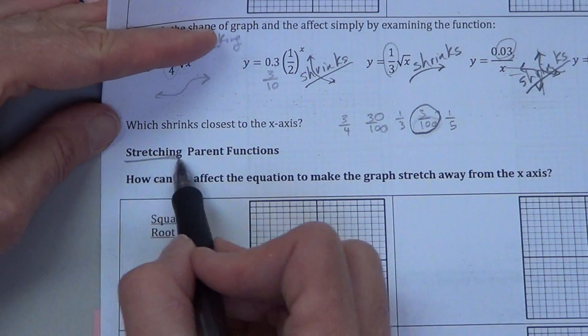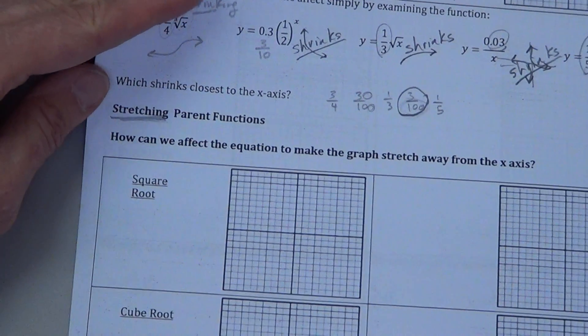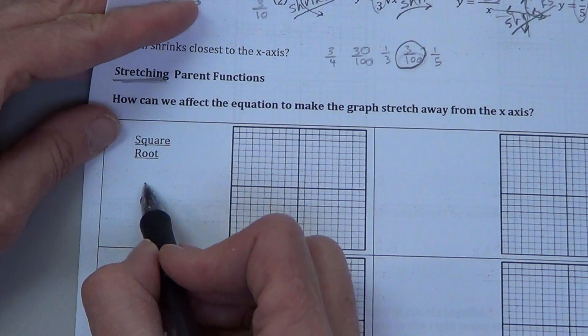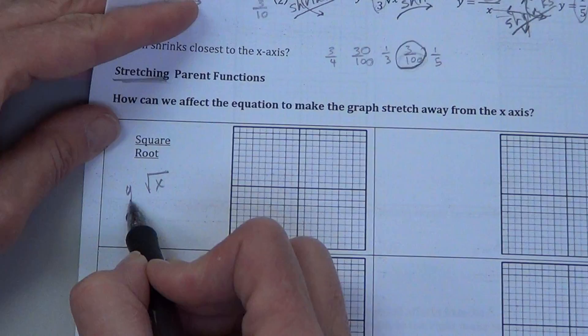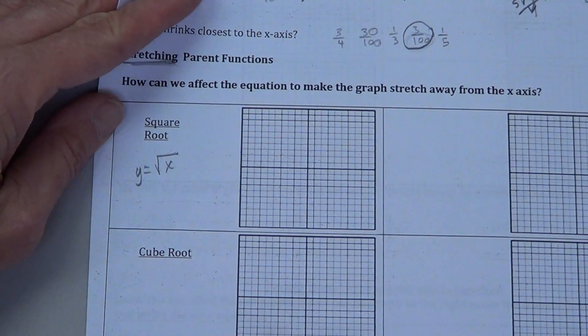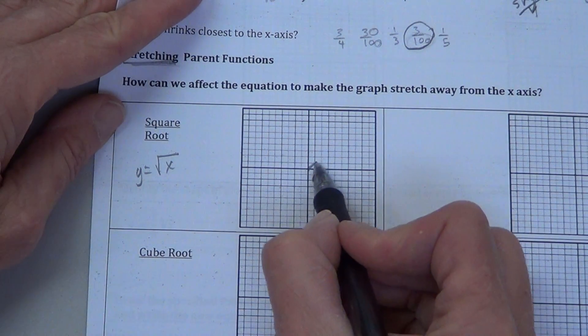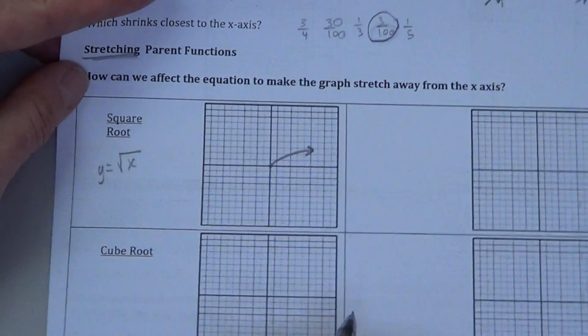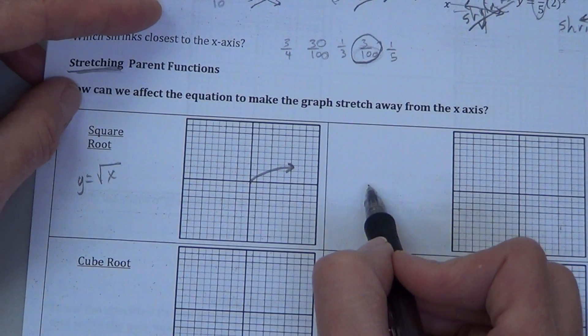Now we're going to stretch. We're going to stretch our functions. Well, back to our square root. By drawing these, I hope you have them down. The parent function here looks like the hook. So now we want to stretch it twice as much.